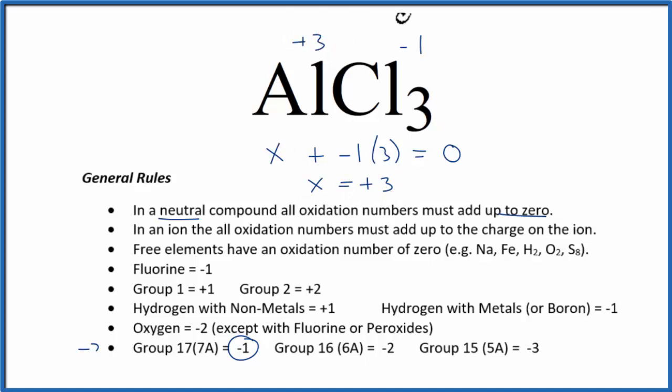If we add all these numbers up, three times minus one, that's minus three, and the plus three, that should equal zero.